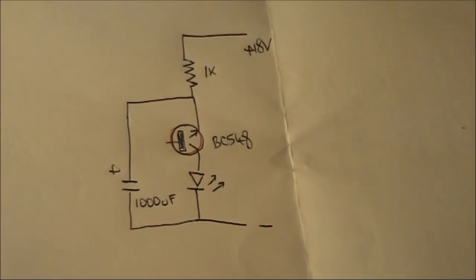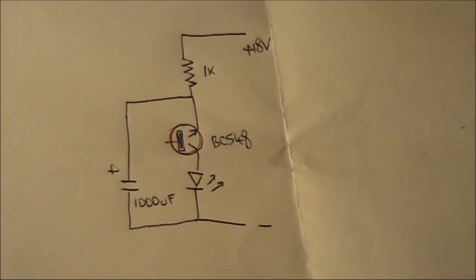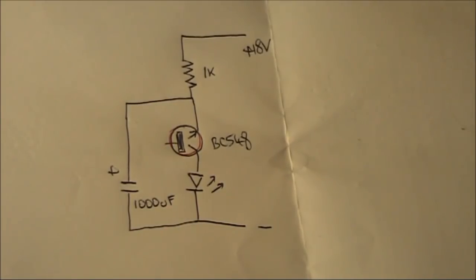This is the circuit. None of the parts are particularly critical, though if you go too low a value in the resistor, it will stop flashing. With the 1000 microfarad shown here, if you go to a higher value like the 2200 I mentioned before, it will be slightly slower in flashing. If you go to a lower value, it will flash quicker.